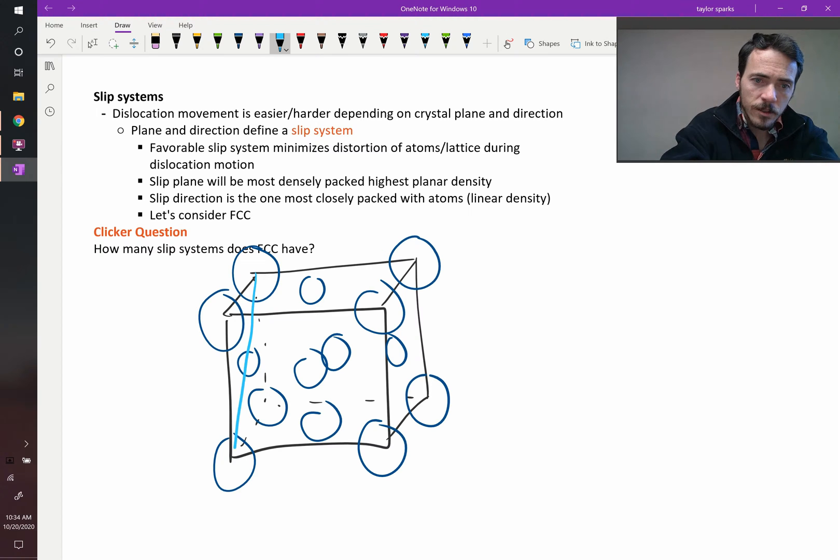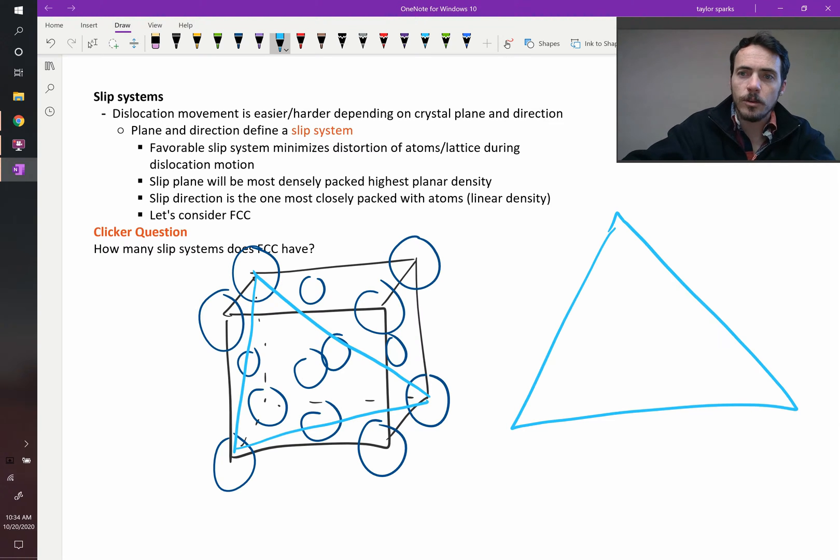All the planes that are crystallographically identical to that plane are going to be the ones that are your highest planar density. Let's take a look at that one. What does it look like in terms of atomic arrangements on that plane?